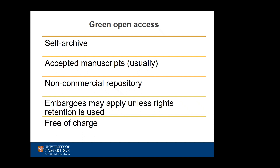Many funders are introducing immediate open access requirements as part of their funding conditions, which means that publishing after an embargo period would not be compliant with the funders' open access requirements. Rights retention offers a solution to this problem because it allows researchers to make their accepted manuscripts available with a CC BY licence immediately on publication of the final version. Rights retention offers researchers a compliance green route. There is more about rights retention and the university's new self-archiving policy later in this libguide.